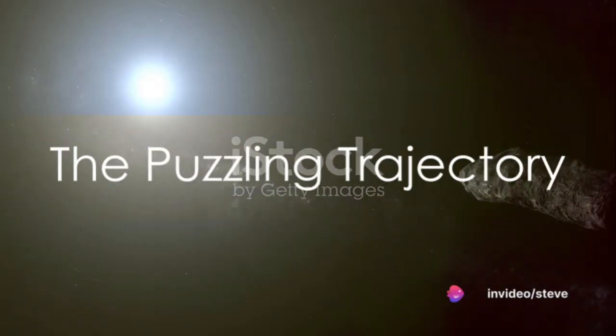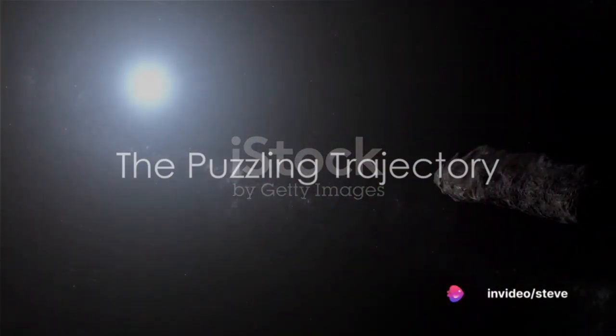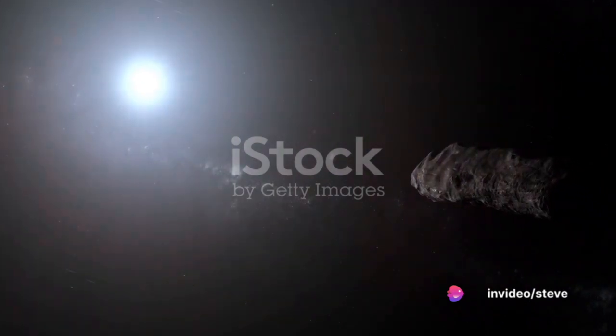Its trajectory is equally puzzling. 'Oumuamua entered our solar system at a blistering speed of 26 kilometers per second, slingshotting around the sun before shooting back out to the depths of space.